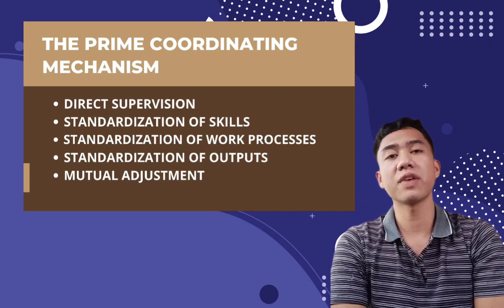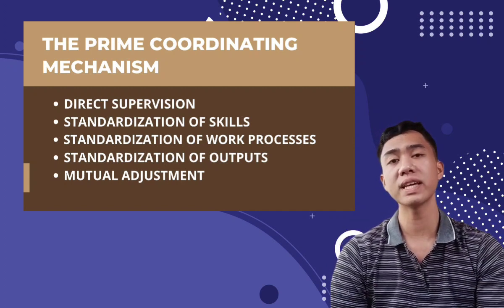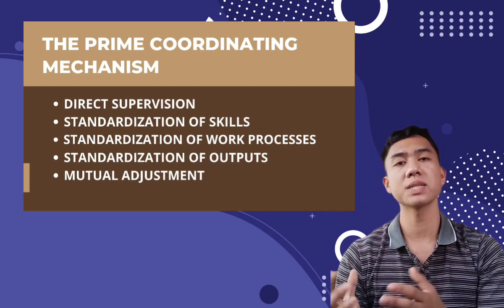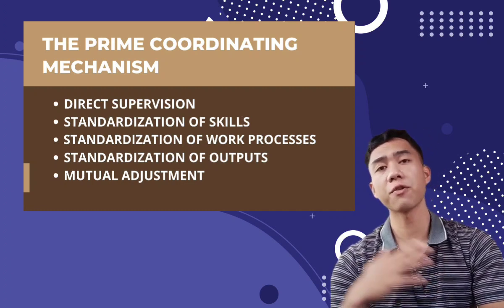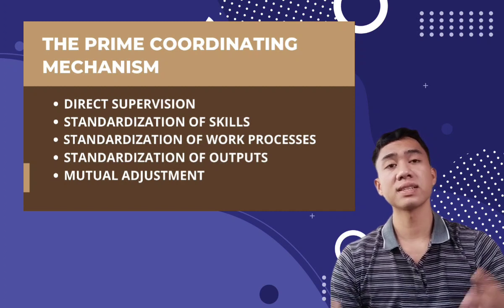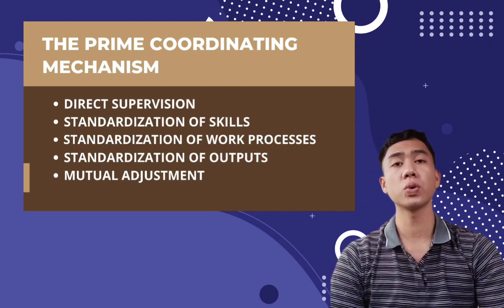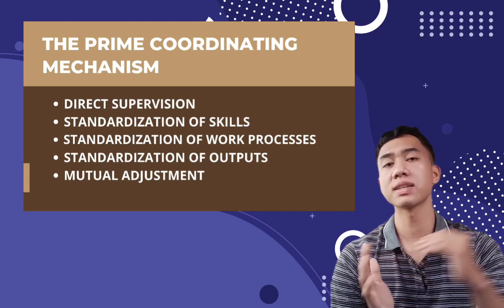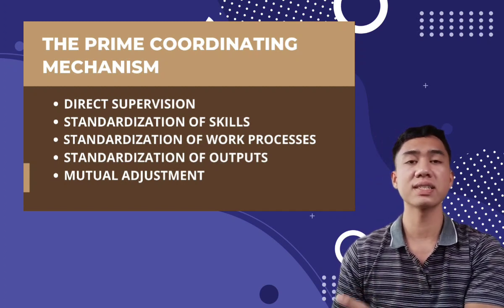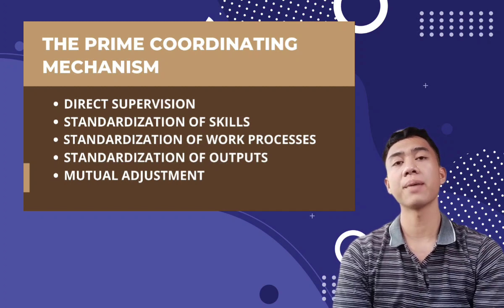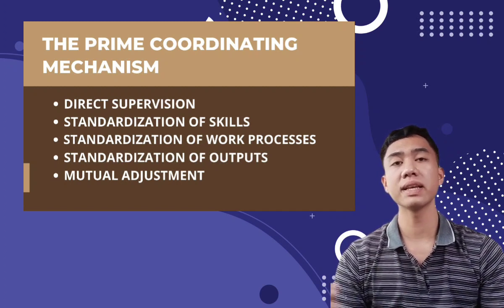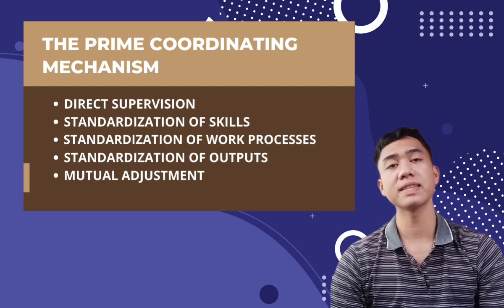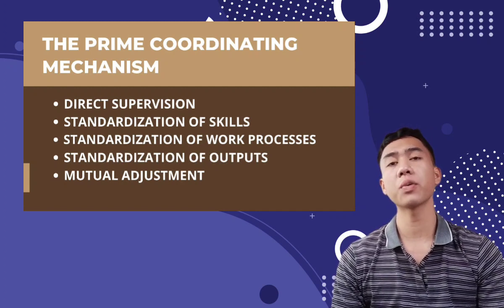We also have the standardization of outputs. Standardization of output exists when the results of the work are specified. Because the raw material processed by the operative core — the teachers — consists of people, the students, not things, standardization of output is more difficult to measure in schools than in other non-service organizations. Nevertheless, a movement toward the standardization of output in schools has occurred in recent years. Examples include competency testing of teachers, state-mandated testing of students, state-mandated curricula, prescriptive learning objectives, and other efforts toward legislated learning.